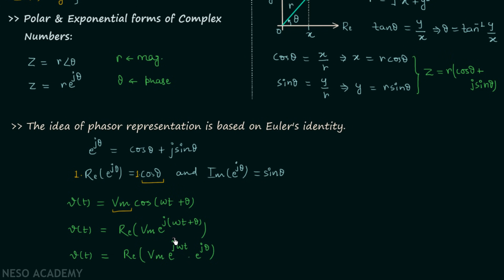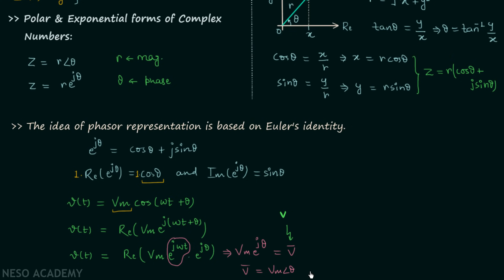We now suppress the time component e^(jωt). After suppressing this time component, we are left with Vm e^(jθ), where Vm is the magnitude and θ is the phase. This is the exponential form of the complex number, which we call the phasor. We represent it as bold uppercase V, and we usually write our phasor in polar form as Vm∠θ.